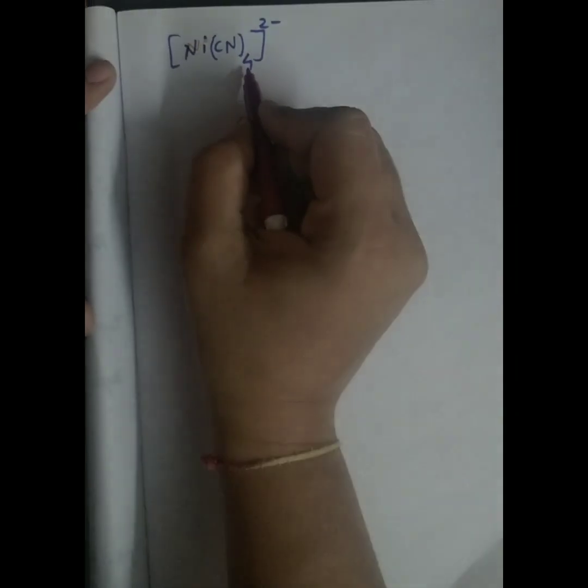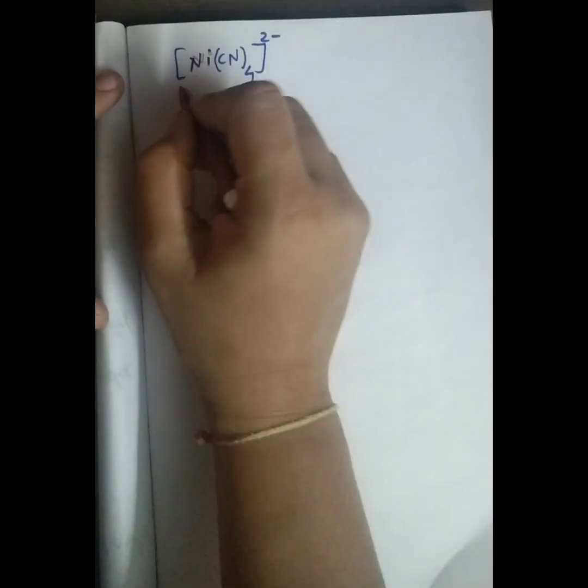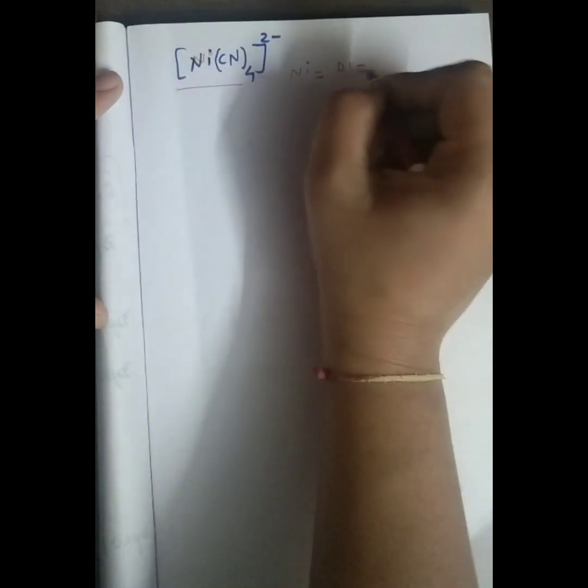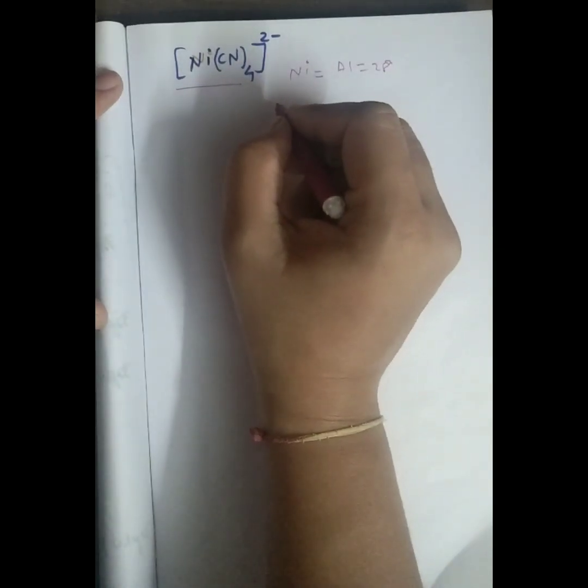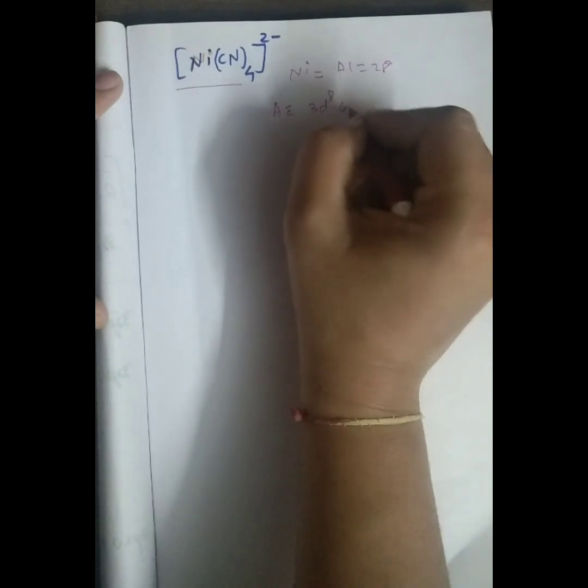I have a discussion of tetracyanonickelate(II) ion. Here's the nickel which has atomic number 28 and the electronic configuration of nickel is argon 3d⁸ 4s².